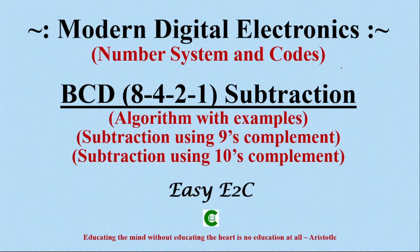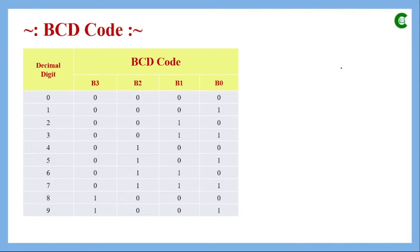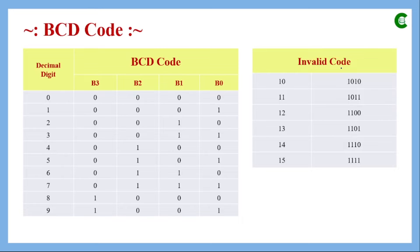Before we start, a brief recap of the mapping between BCD code and decimal digits. From 0 to 9, decimal digits are represented by 4-bit binary numbers — the BCD representation is the normal binary representation using 4 bits. Since 4 bits can represent 16 values, the remaining 6 digits from 10 to 15 are invalid in BCD code.